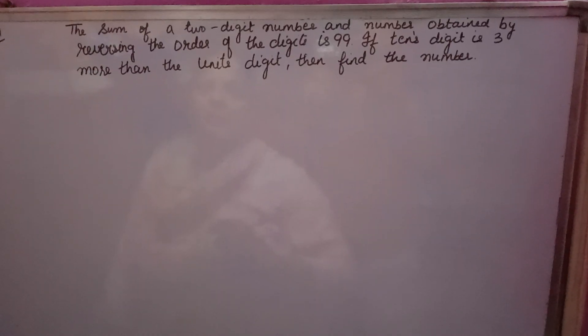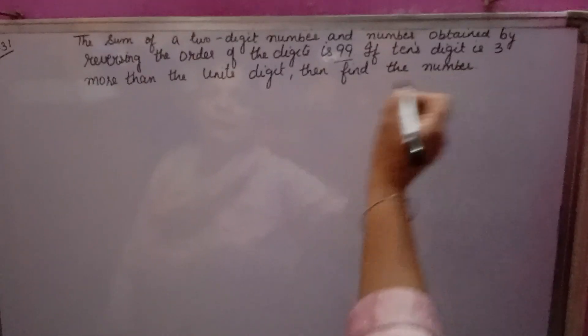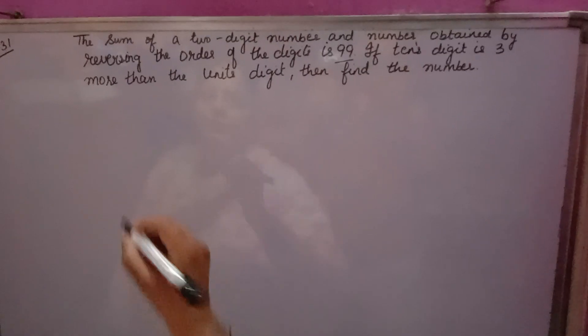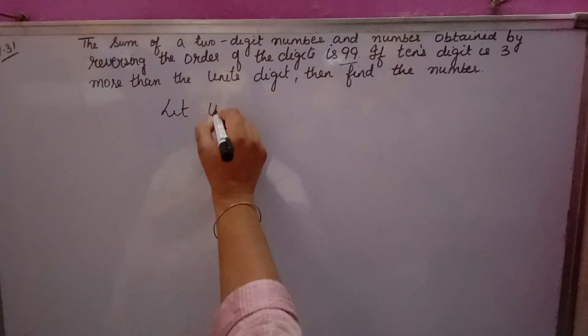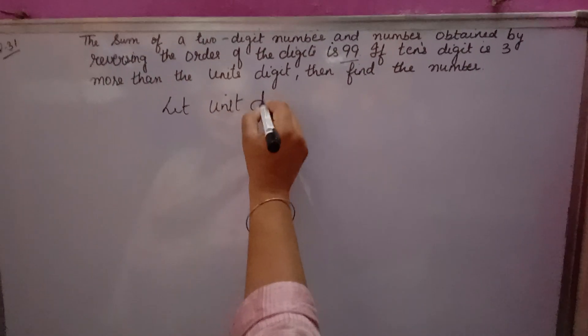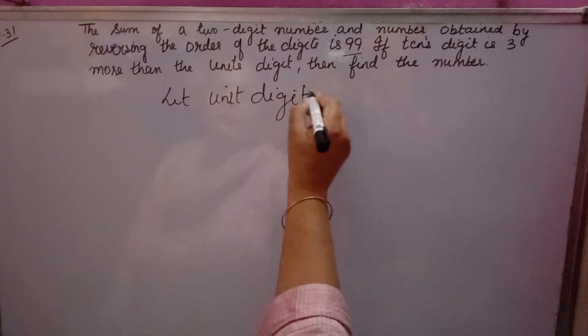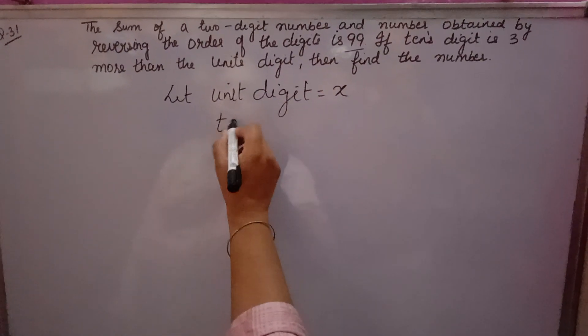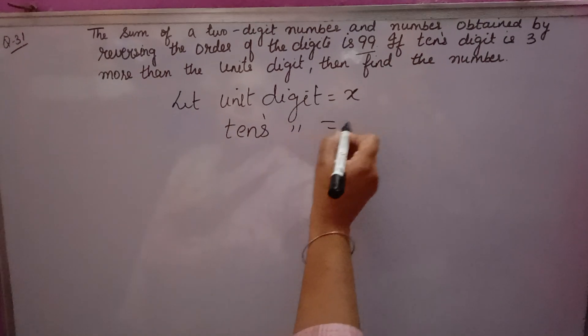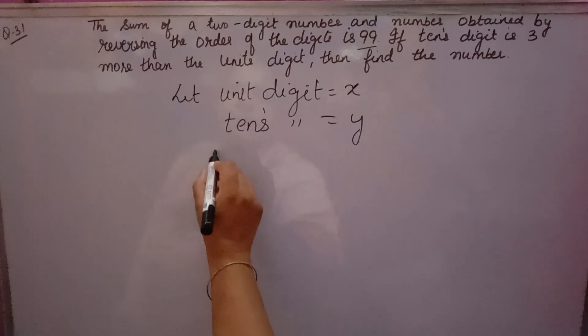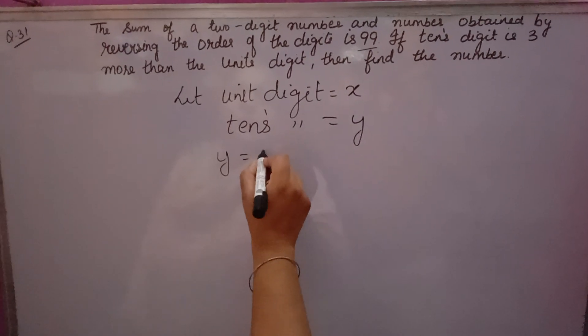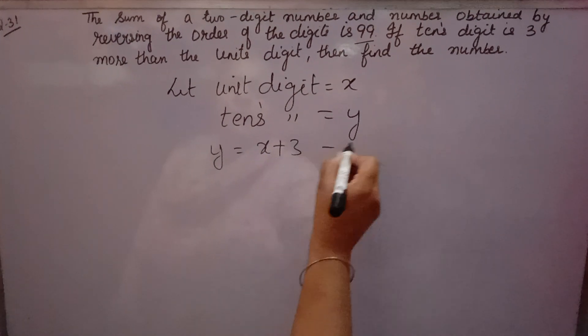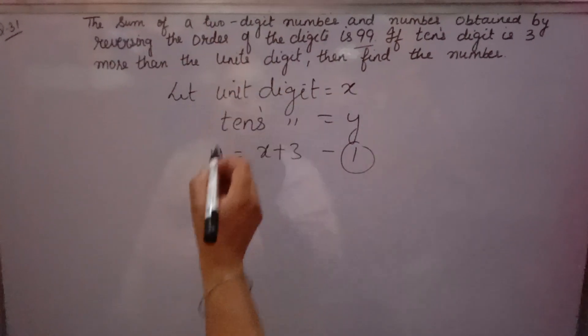The number obtained by reversing the order of the digits is 99. The tens digit is 3 more than the unit digit. Let the unit digit equal x and the tens digit equal y. The tens digit means y is equal to 3 more than x, so y equals x plus 3. This is the first equation. For the sum of a two-digit number, you multiply the tens by 10, giving 10y plus x.